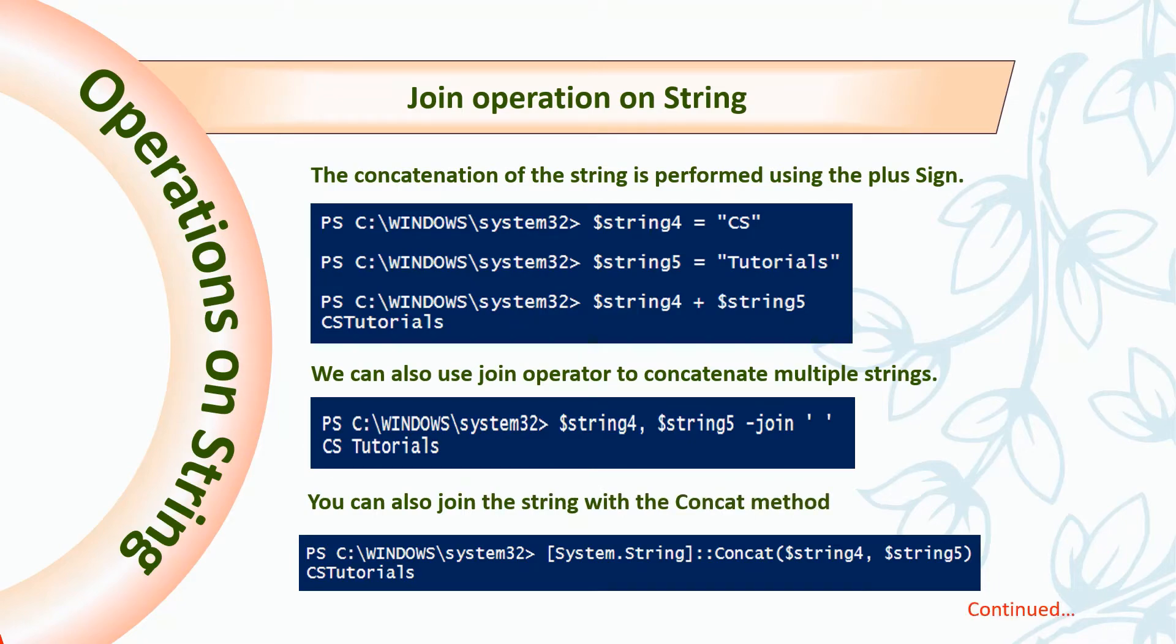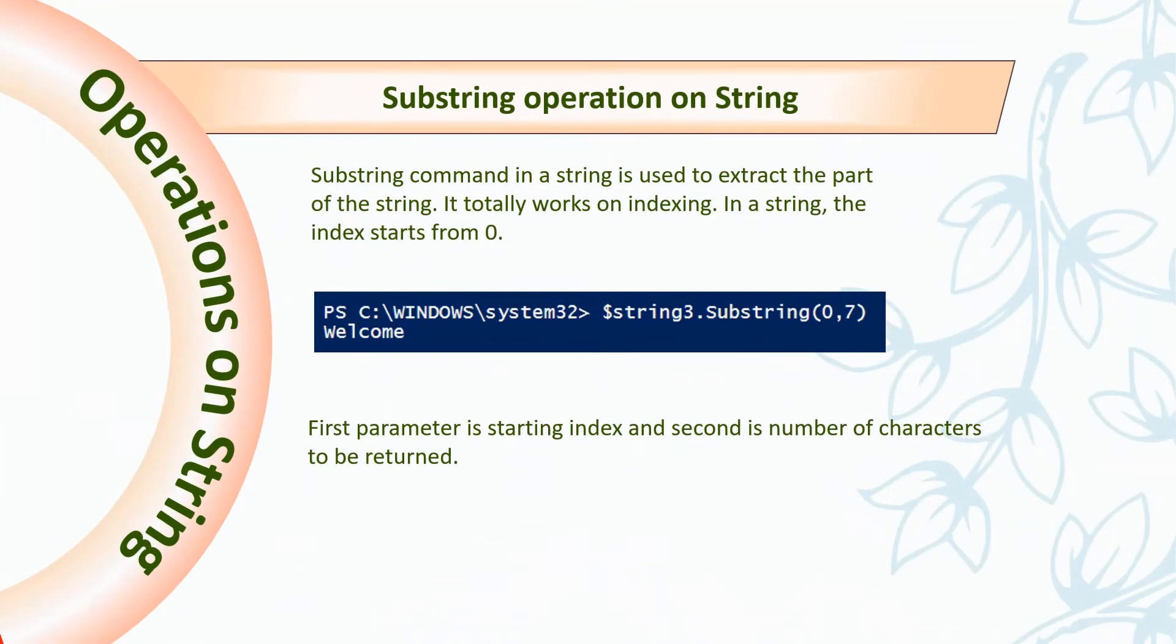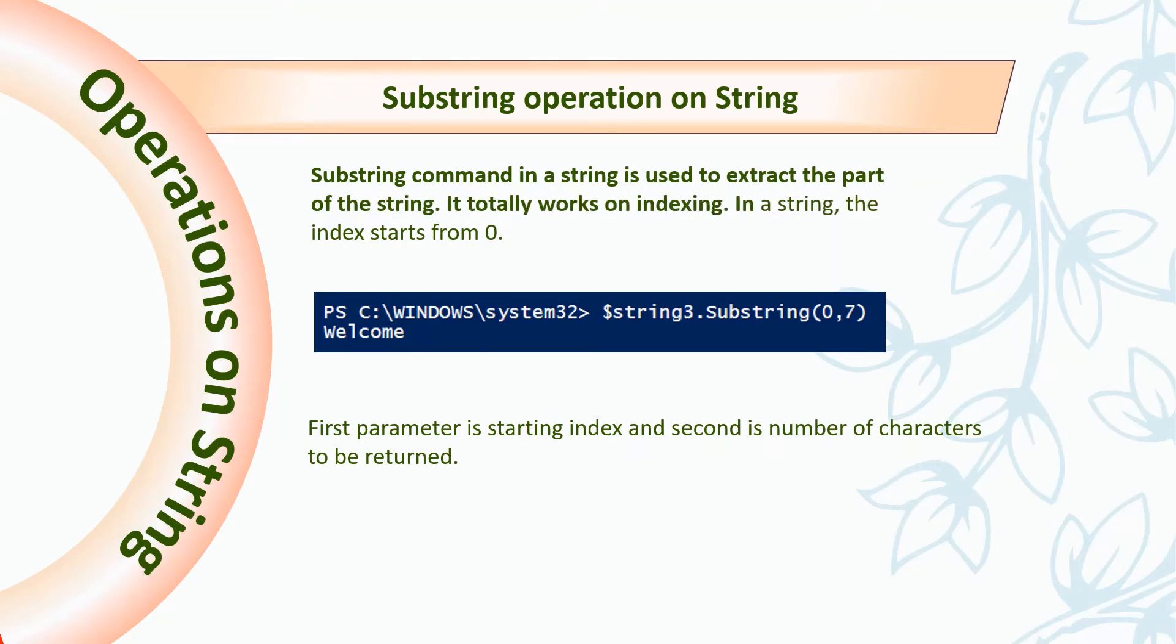Next is substring. Substring command can be used to extract part of a String. It totally works on indexing. In String, the index starts from 0 just like in array. First parameter is the starting index and second is the number of characters to be returned as the output of substring.